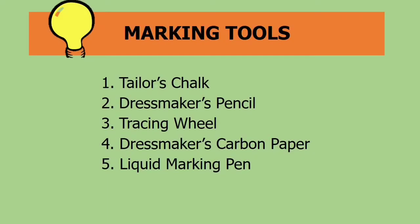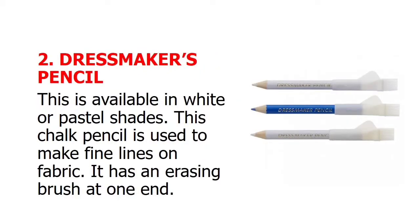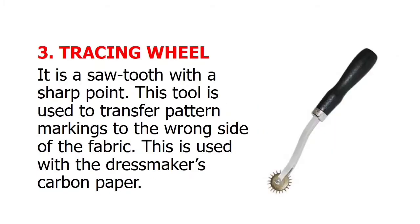Next, let's talk about the different marking tools. We have 5: tailor's chalk, dressmaker's pencil, tracing wheel, dressmaker's carbon paper, and liquid marking pen. Tailor's chalk is essential as a marker for use on materials; it is available in a range of colors and is removed by brushing. The dressmaker's pencil is available in white or pastel shades; this chalk pencil is used to make fine lines on fabric and has an erasing brush at one end. Tracing wheel: it is a sawtooth with a sharp point, used to transfer pattern markings to the wrong side of the fabric, and is used together with dressmaker's carbon paper.